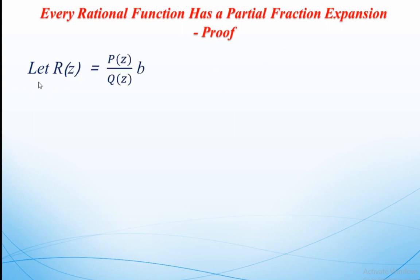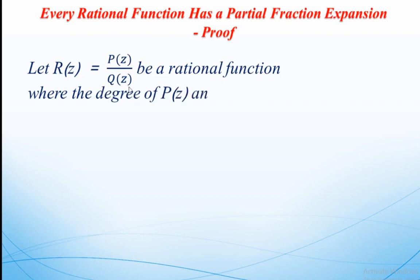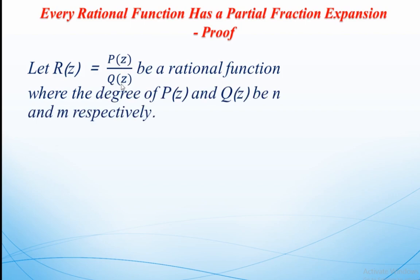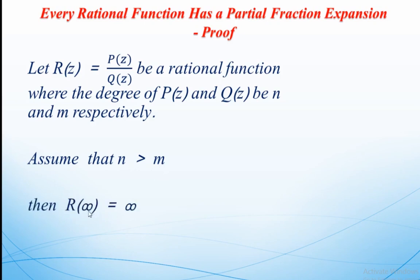Going to the proof of the theorem: let us assume r(z) = p(z)/q(z) be a rational function where the numerator degree is n and the denominator degree is m. These are polynomials. Now, assume that the numerator degree is greater than the denominator degree, that means n > m. Then definitely r(∞) = ∞, therefore infinity is a pole of r(z).